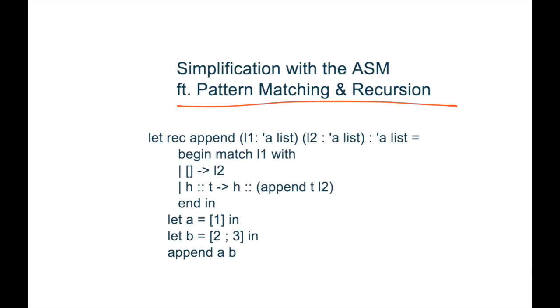so we're going to be using this function to append this list A, which is just one, to this list B, which is two, three, in this function called append AB. And then we're going to look at this whole thing on the abstract stack machine simplification model.